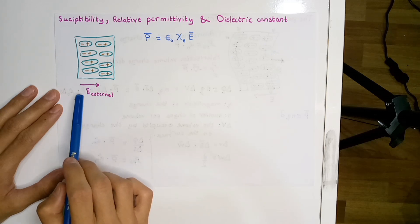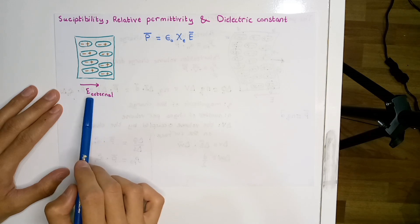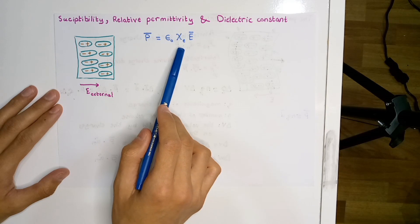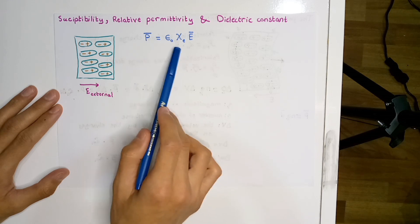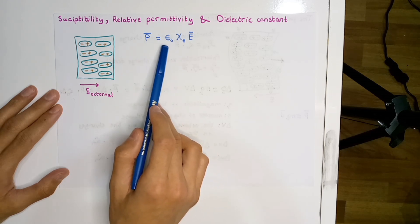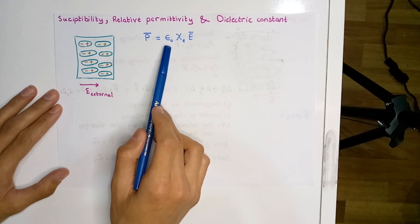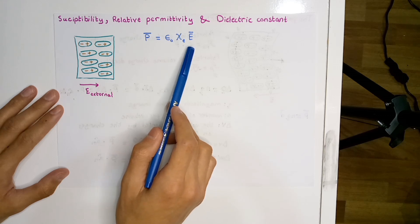In fact, this polarization which is caused by the external electric field is proportional to the applied electric field in the first place. For most of the time, it's represented by this equation: P, which is the polarization vector, is equal to the permittivity of free space times some proportionality constant times the electric field.